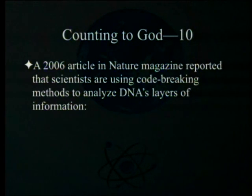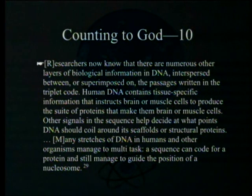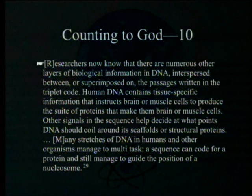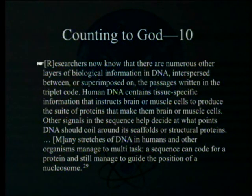A 2006 article in Nature reported that scientists are using code-breaking methods to analyze DNA's layers of information. Researchers now know there are numerous other layers of biological information in DNA — interspersed between or superimposed on the triplet code. Human DNA contains tissue-specific information that instructs brain or muscle cells to produce the suite of proteins that makes them what they are. Many stretches of DNA multitask: a sequence can code for a protein and still guide the position of a nucleosome.